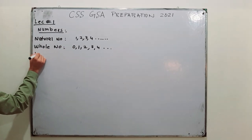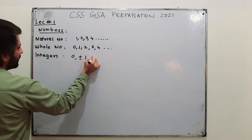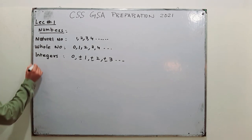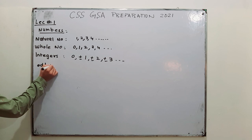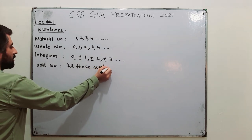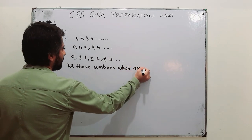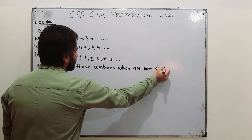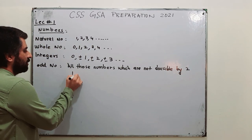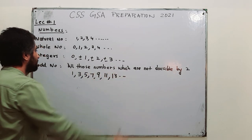Then you have integers, and they include zero; they have both positive and negative numbers — positive one, negative one, positive two, negative two — meaning positive numbers and negative numbers as well as zero are part of integers. Then odd numbers — all those numbers which are not divisible by two. For example, one, three, five, seven, nine, eleven, thirteen, and so on.